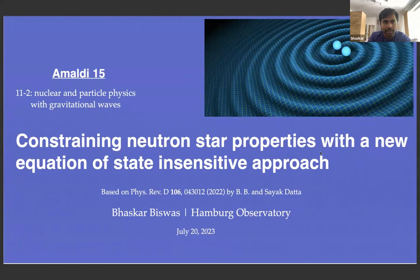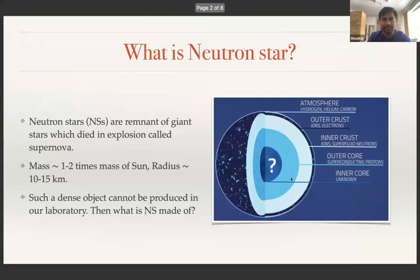I'll start with a brief introduction about the neutron star. As you all know, neutron stars are the remnant of a supernova explosion. A typical neutron star has a mass between one to two solar masses and a radius of the order of 10 to 15 kilometers. From these numbers, you can estimate that the density of the neutron star is enormous.